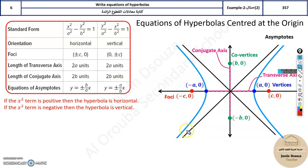The graph for a hyperbola is kind of like two parabolas. You can see it over here and over here.